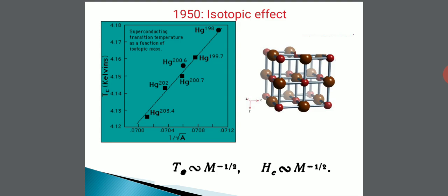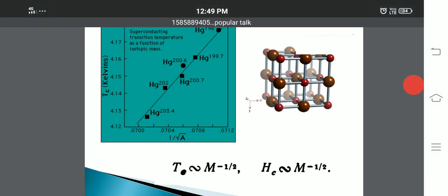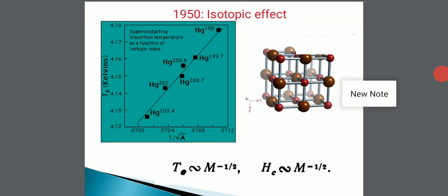Another important feature of superconducting materials is the isotope effect, which means the critical temperature depends on the isotopic mass of the element. For example, mercury-198 has a transition temperature of around 4.18 K, whereas mercury-203.4 has a transition temperature of around 4.125 K. So the critical temperature Tc is directly proportional to M^(-1/2), where M is the isotopic mass. This is called the isotope effect.